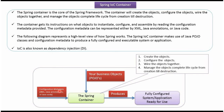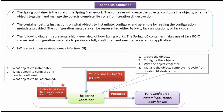From configuration metadata, Spring container gets instructions on what objects to instantiate, what objects to configure and how to configure, and what objects to be assembled. Configuration metadata can be XML, Java annotation, or Java code. Spring container makes use of POJOs and configuration metadata to produce a fully configured system or application which is ready to use.